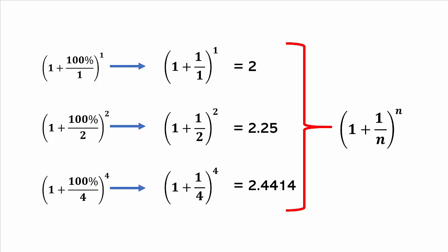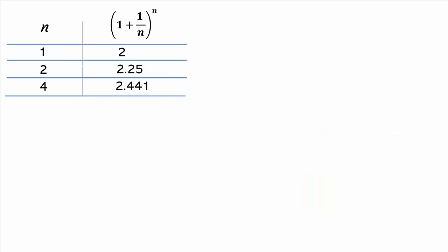1 plus 1 divided by n, the whole raised to the power of n. This formula has great significance in mathematics. Now let us use this general formula to calculate the growth by taking different values of n. We have already calculated the growth for n equal to 1, 2, and 4. Let us take the value of n higher and higher, as shown in the table. When n is equal to 12, the yearly growth comes out to be 2.613.